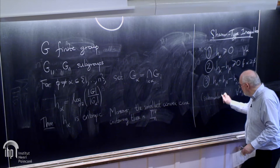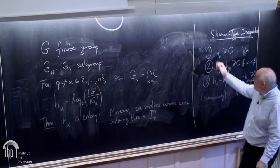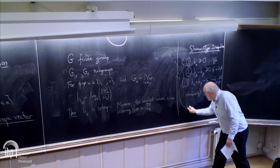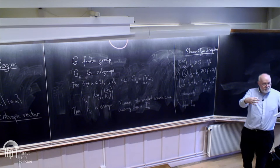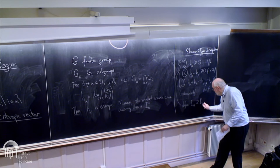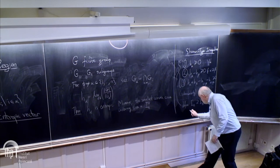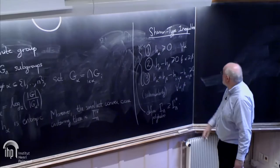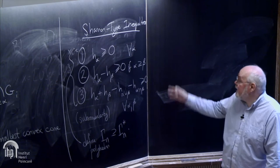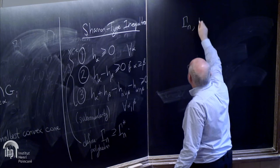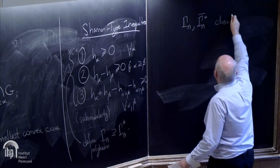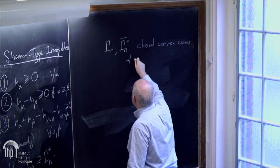That's where the polymatroids come in. The set of all satisfying these is called gamma n. It is the set of points satisfying all these, and it is potentially larger than gamma n star. It's very nice—it's a polyhedron, clearly, because of the nice linear expressions here.